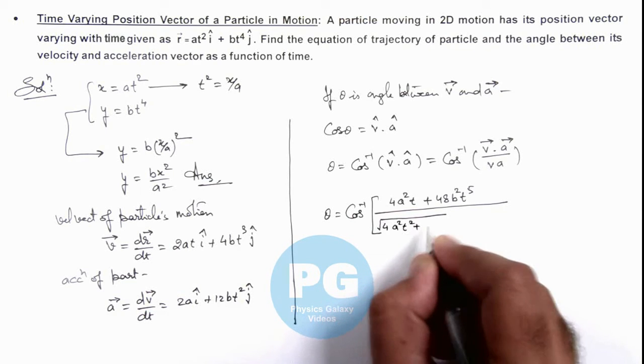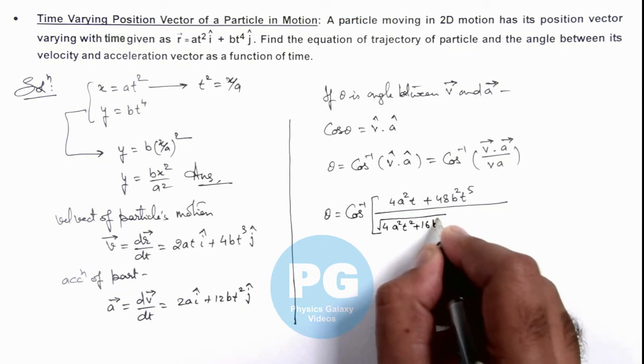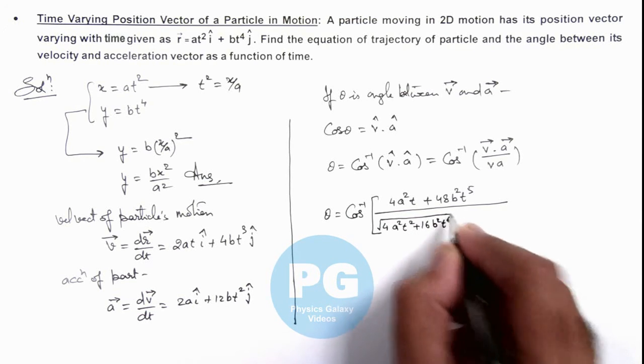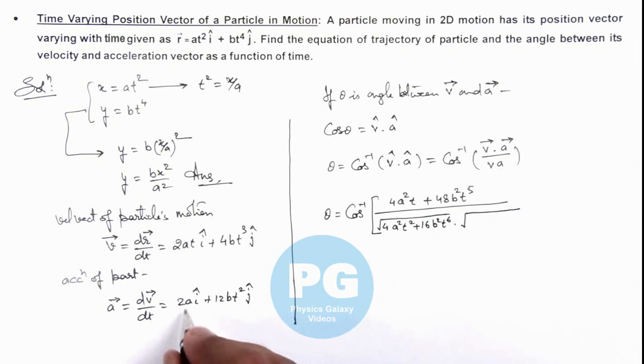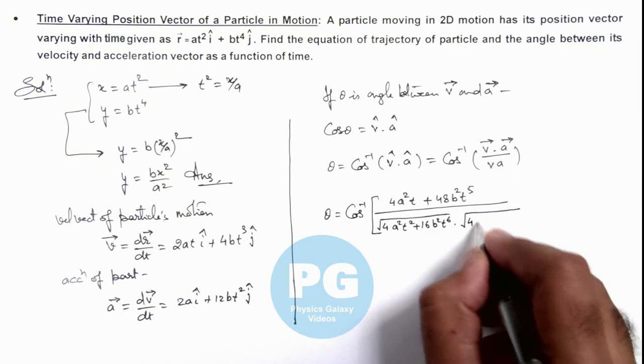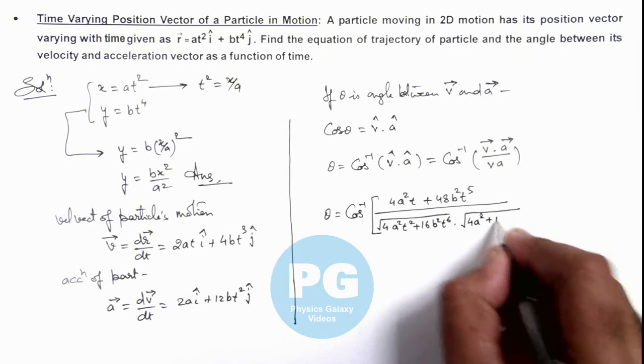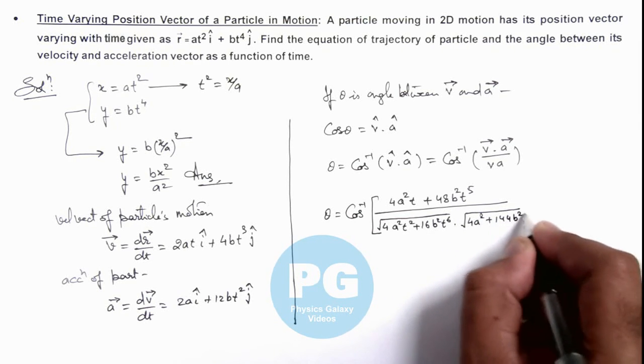And multiplied by the magnitude of the acceleration vector, which is √(4a² + 144b²t⁴).